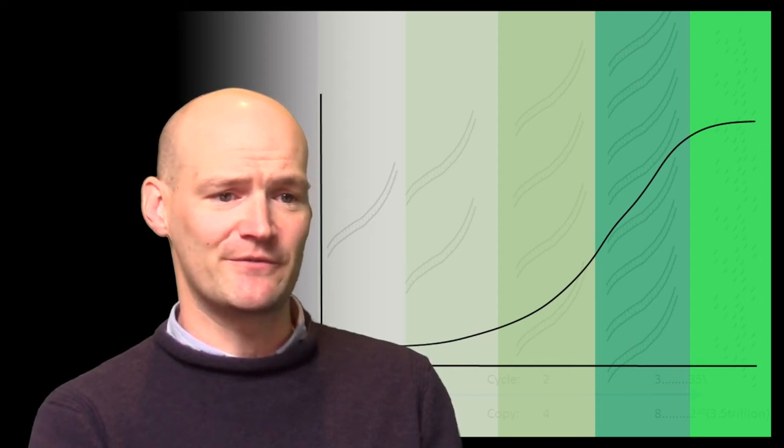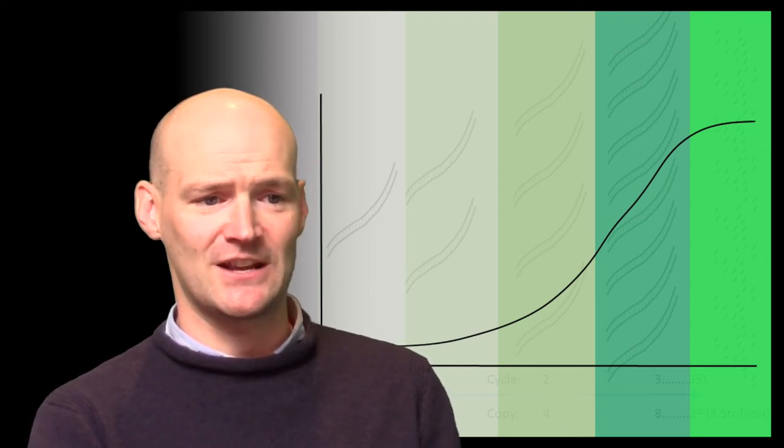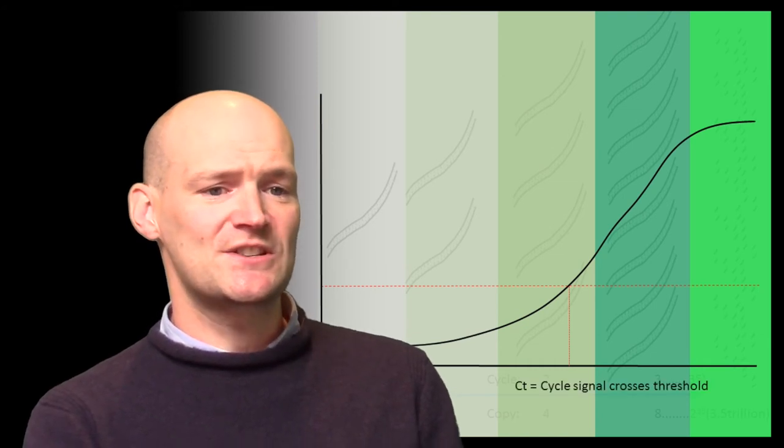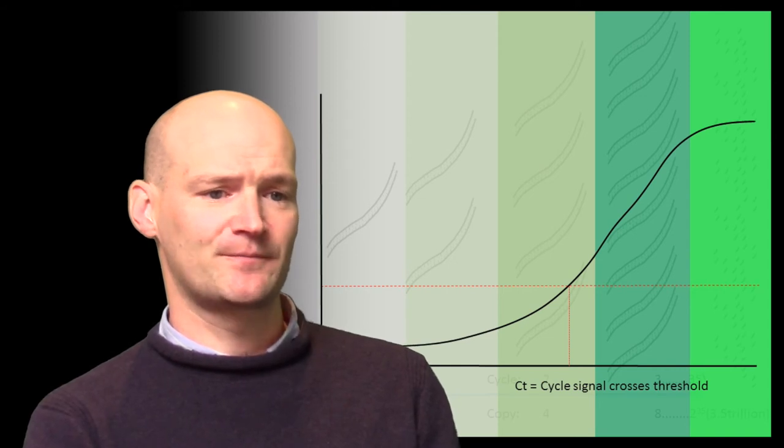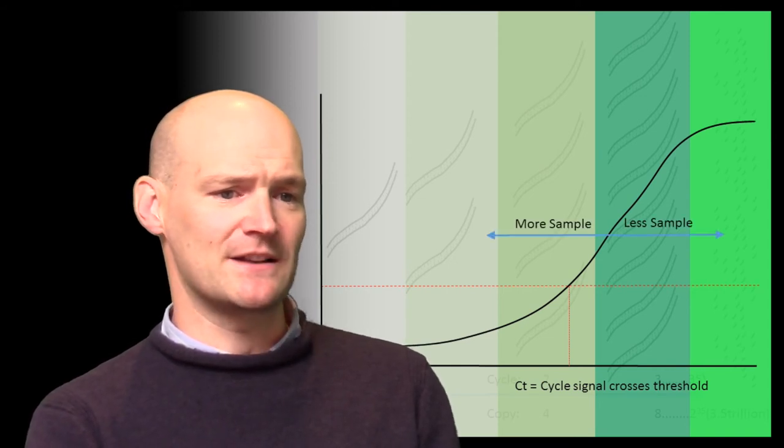The amplification curve is used to provide a standardized measure of amplification, termed the CT value, which is the cycle at which the fluorescent signal reaches a user-defined threshold and is directly proportional to the amount of starting material.